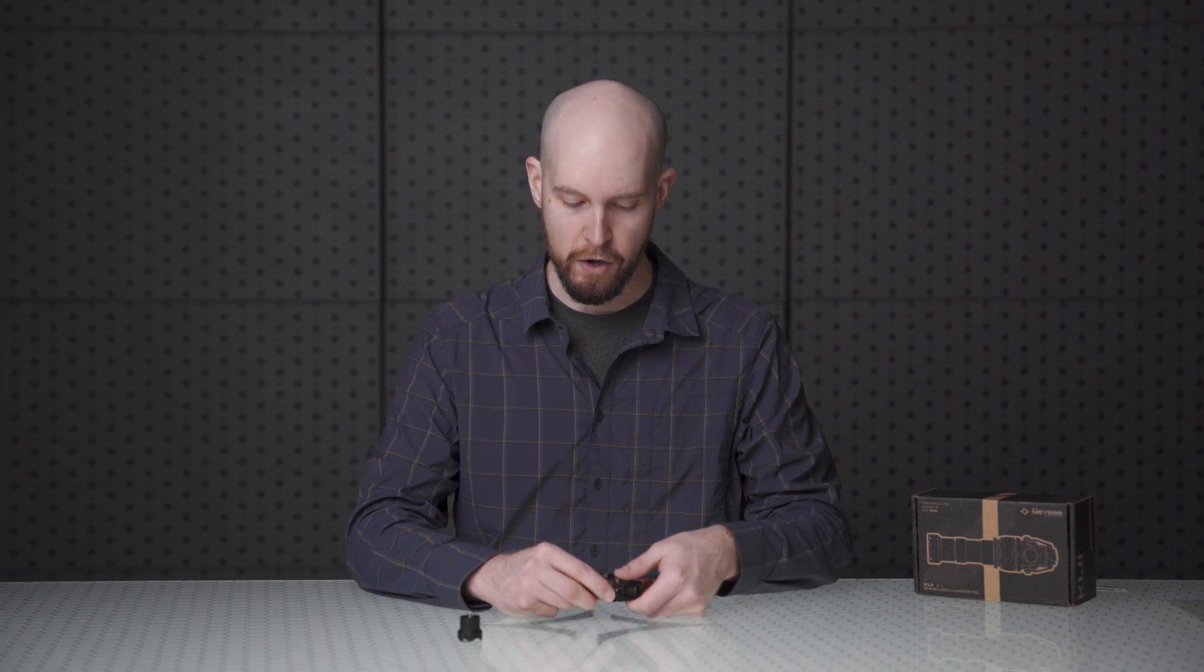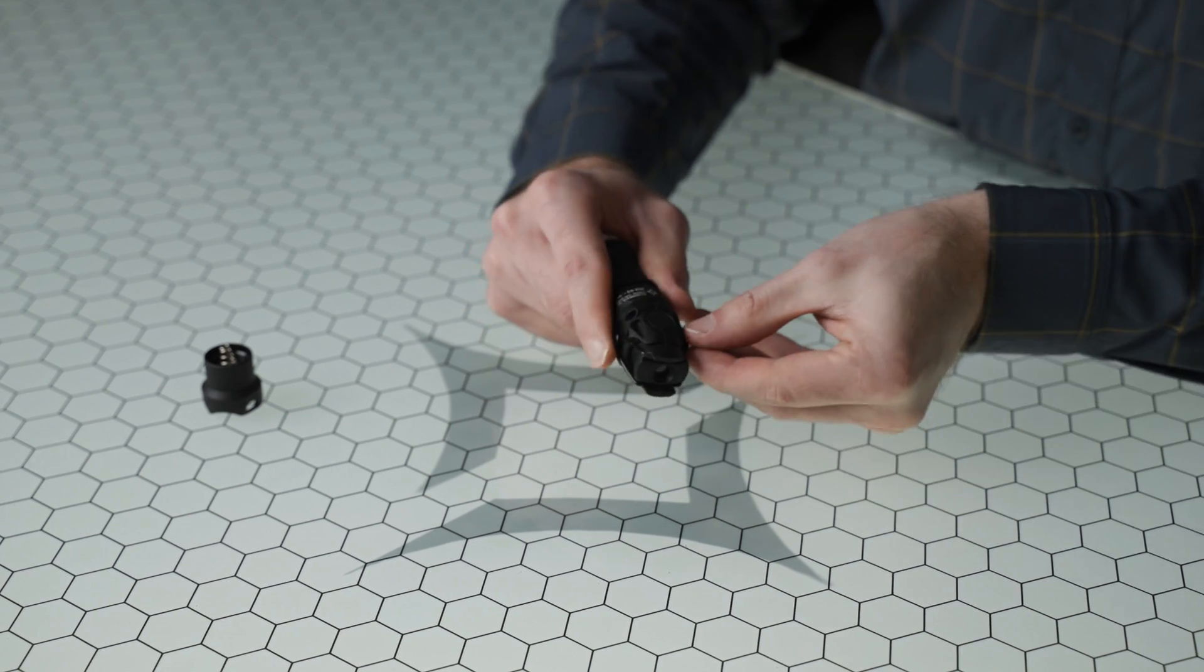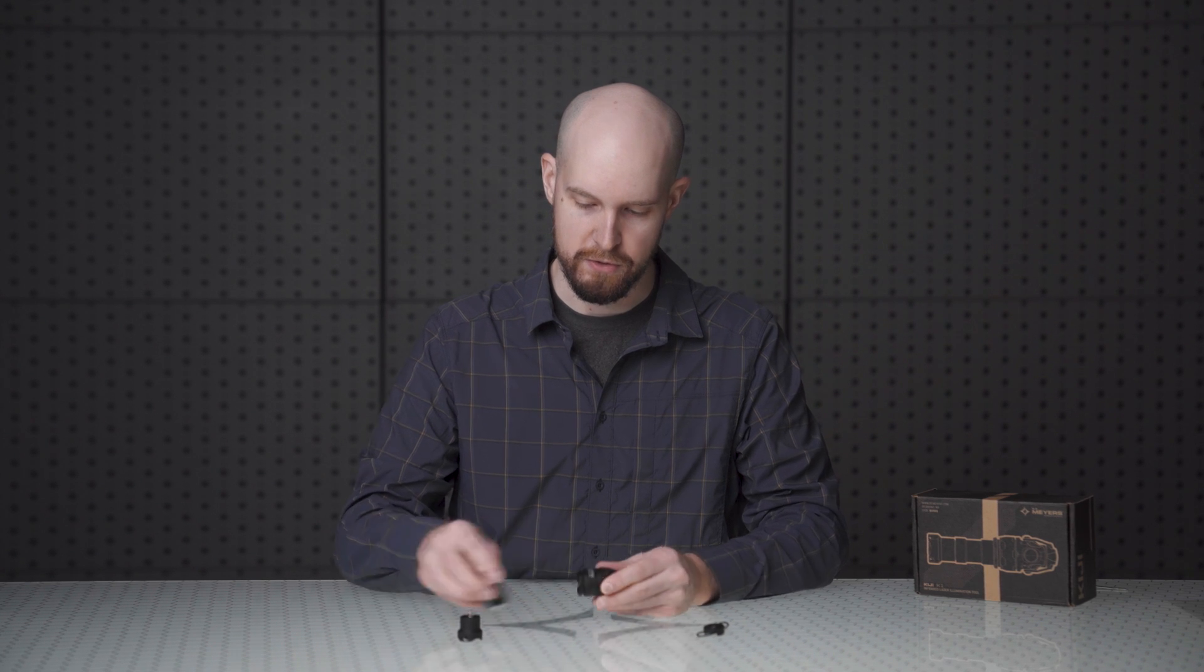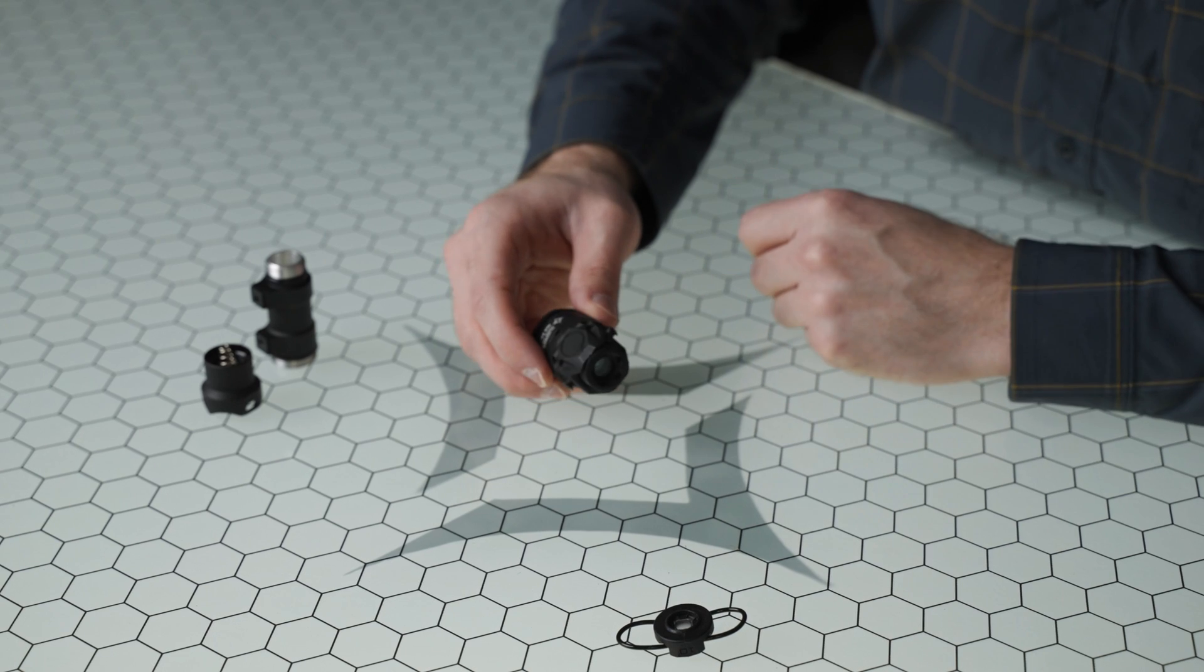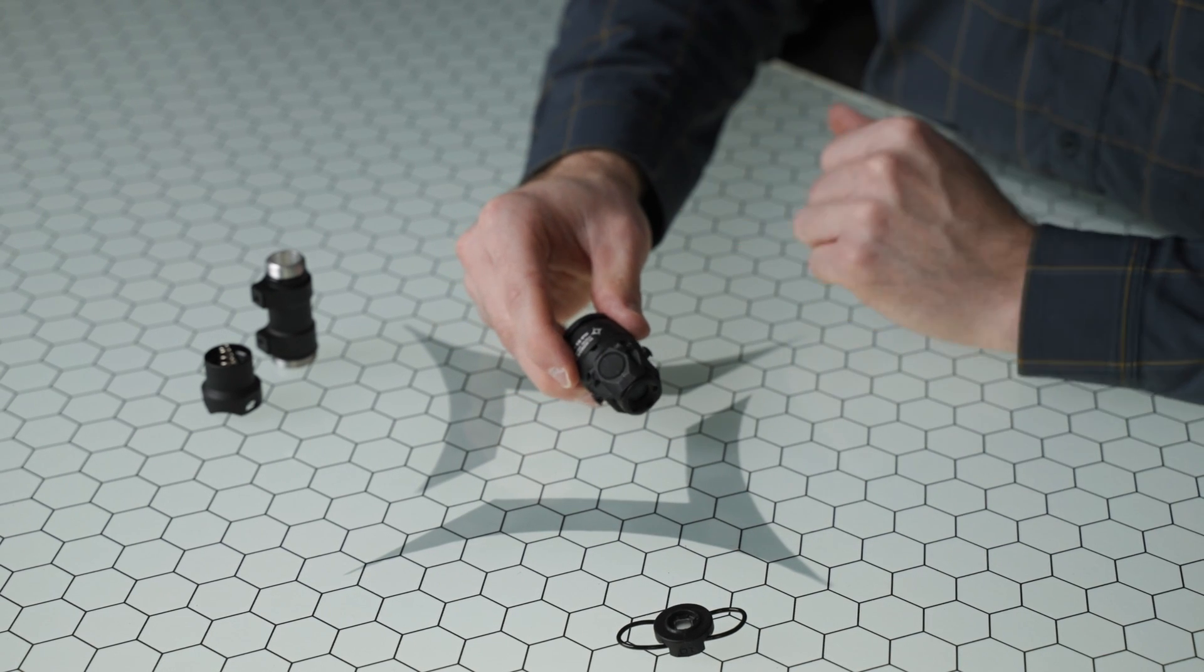We'll go over the indicator light in more detail when we talk about programming and operation of the device. And also so that you can orient the flip cap where you want it. And that is the basic amount of breakdown that you need to do for any given maintenance. You have access to your aperture window there. This cowling itself doesn't really need to be manipulated.